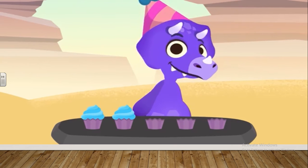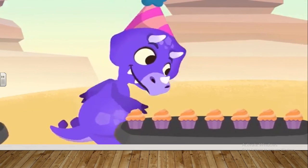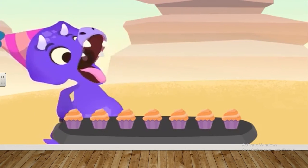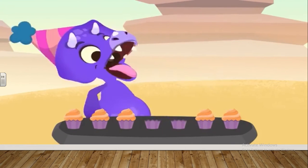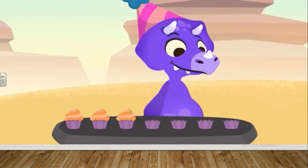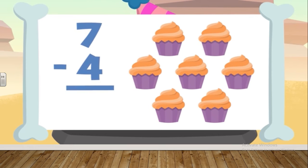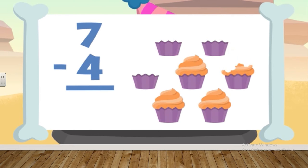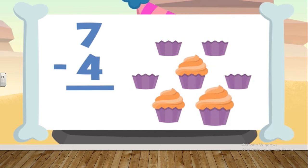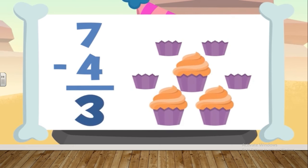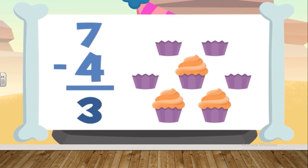Are you still hungry? There's nothing we can't do with you, is there? On the table, there were seven cupcakes and you've eaten four of them. If we take away four from seven — one, two, three, and four — the result is one, two, and three. Seven minus four equals three.